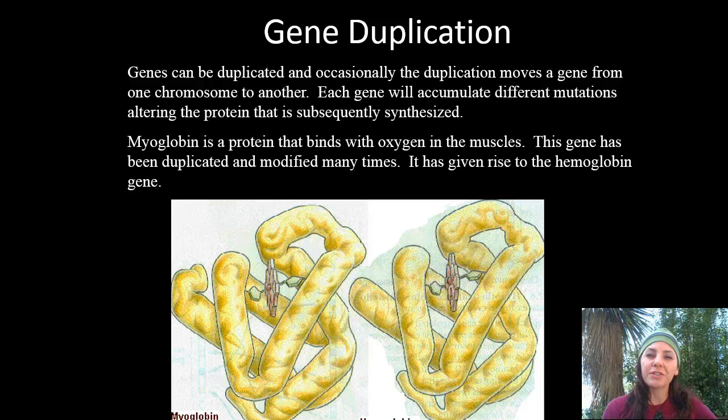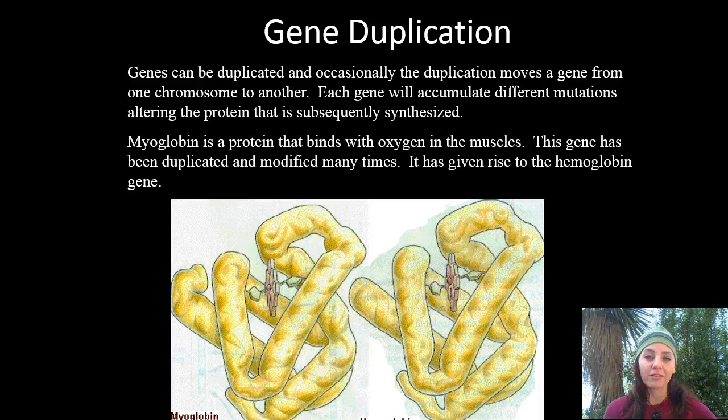Genes can be duplicated, and occasionally the duplication moves the gene from one chromosome to another. Each gene will then accumulate different mutations, altering the protein that is subsequently synthesized. For example, myoglobin is a protein that binds with oxygen in the muscles, and this gene has been duplicated and modified many times, giving rise to the hemoglobin gene.